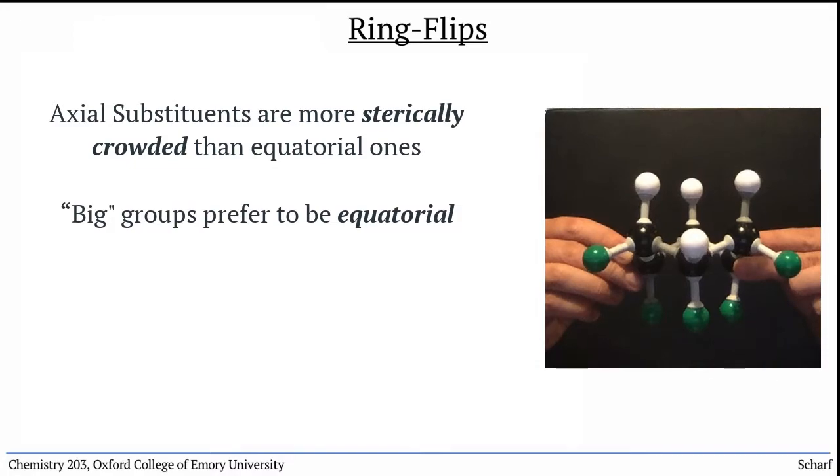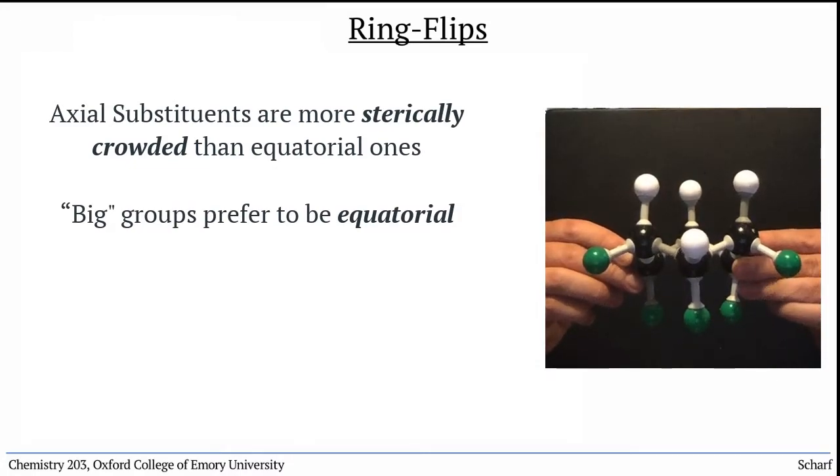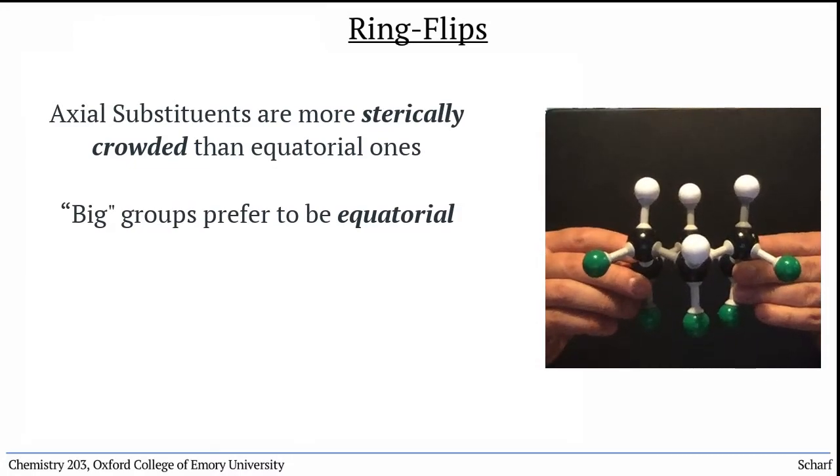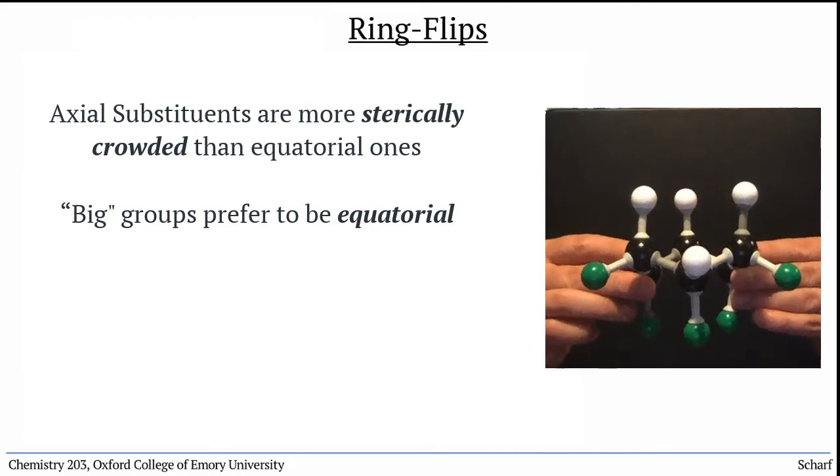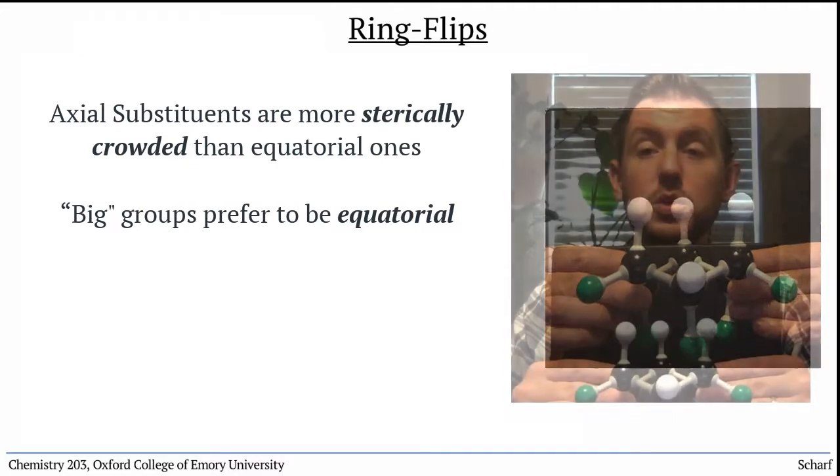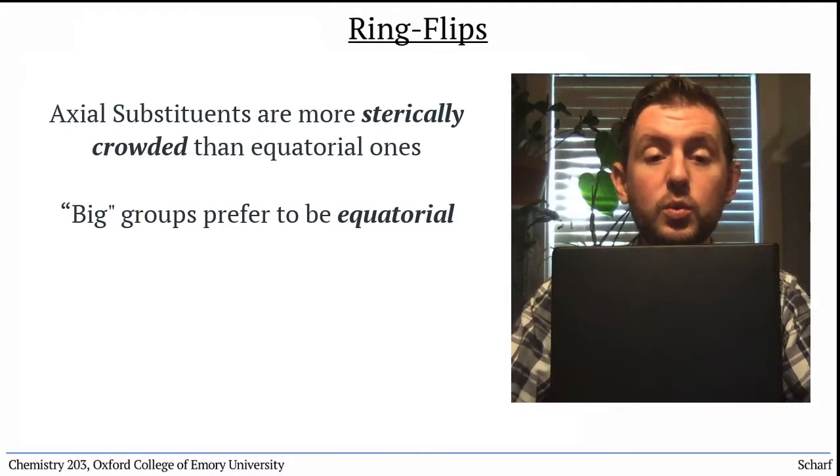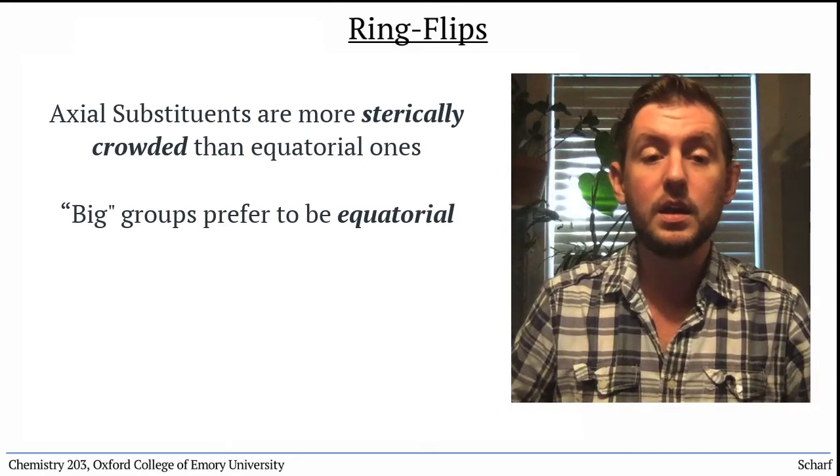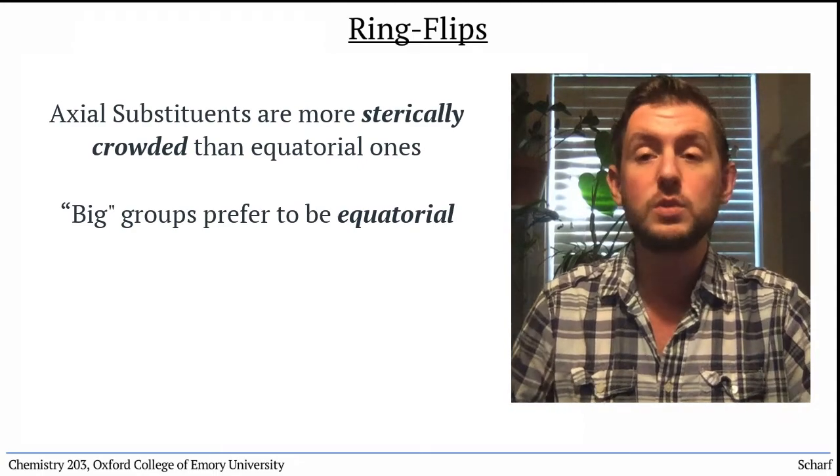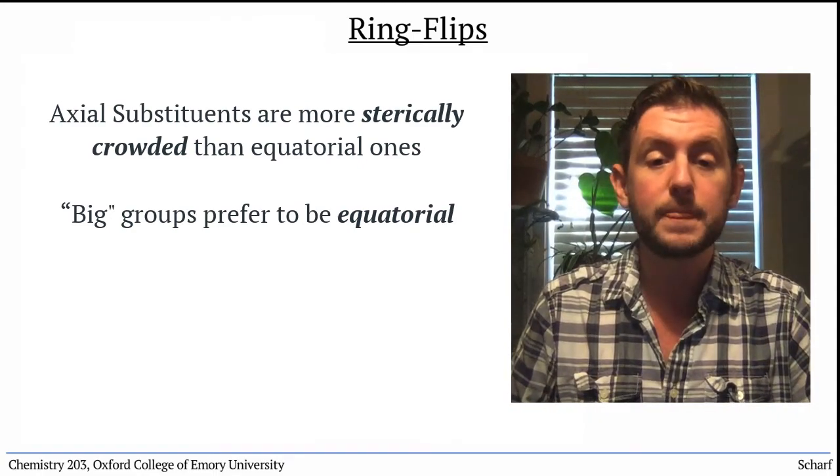This means that for a given cyclohexane, there are two possible chair conformations, and the one that has the most and largest substituents in equatorial positions is more stable than those substituents are in axial positions.